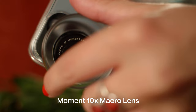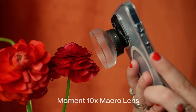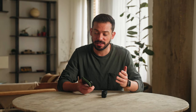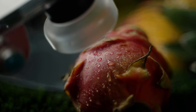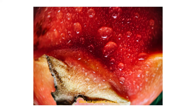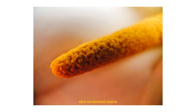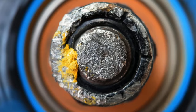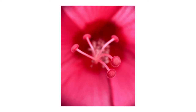So up next we have the Moment macro lens. They did add macro capabilities to the recent iPhone 14; however, a lot of phones still don't have macro capabilities. This allows you to get really, really up close — if you're shooting something like flowers, insects, or eyes — anything up close where you want nice texture and detailed shots to help elevate things and change up your focal lengths.